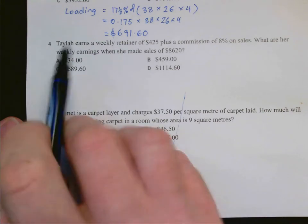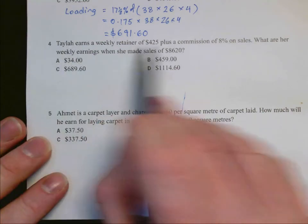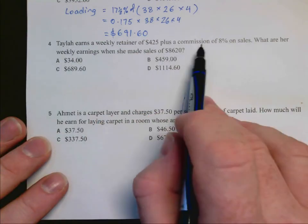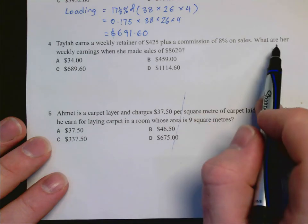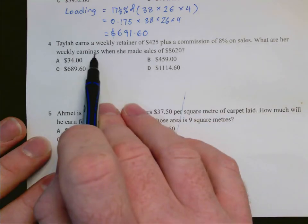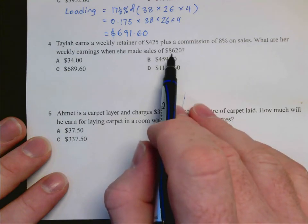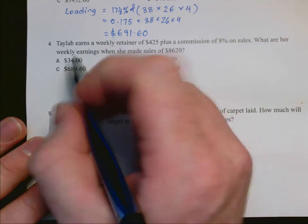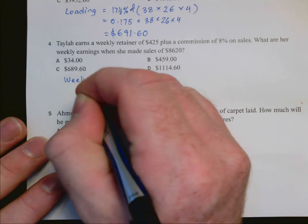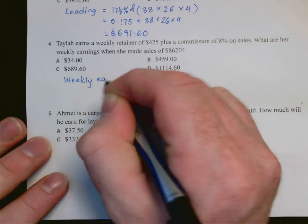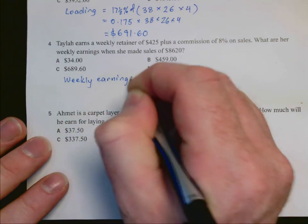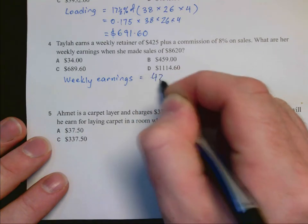For question 4, Taylor earns a weekly retainer of $425 plus commission of 8% on sales. We are asked for her weekly earnings when she made sales of $8,620. So for a commission, the retainer is a fixed amount that does not depend on the sales. So she receives that.